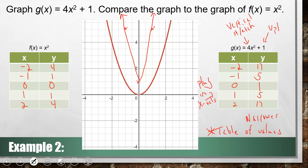So what's true about this graph and how has it changed? If you think about how this graph has changed, we have a vertical stretch by a factor of 4, which resulted in the graph being narrower. And then we also have a vertical shift up 1.